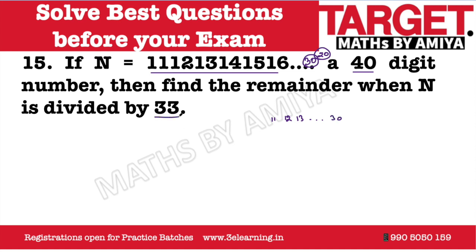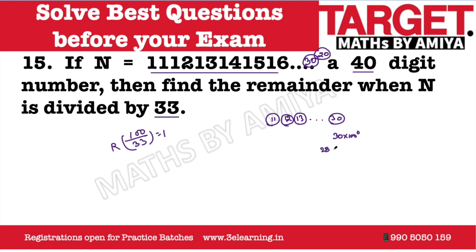We need to divide it by 33. What do we mean by 33? When we divide 100 by 33, the remainder is actually 1. So when we make a bundle of double digits — which is nothing but 100 to a power — each bundle has some value. Like this one is 30 × 100^0, we have 29 × 100^1, then we have 28 × 100^2. These are the numbers.